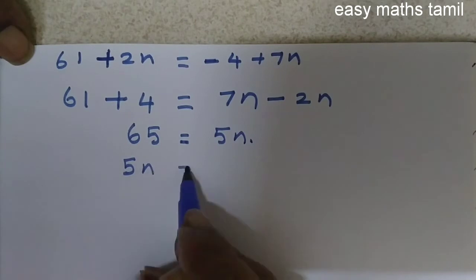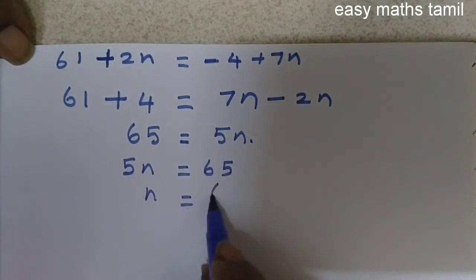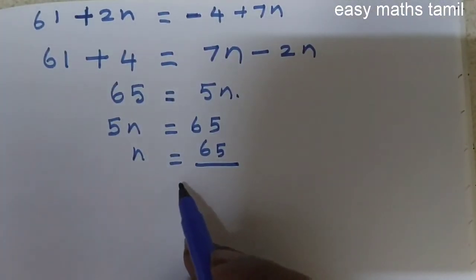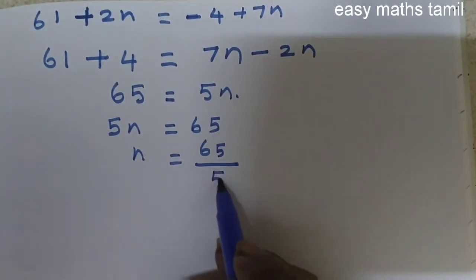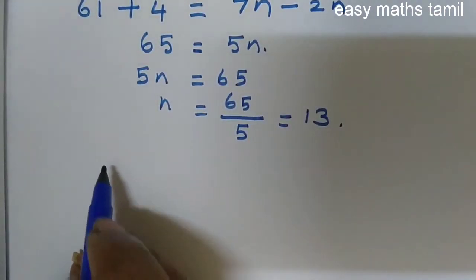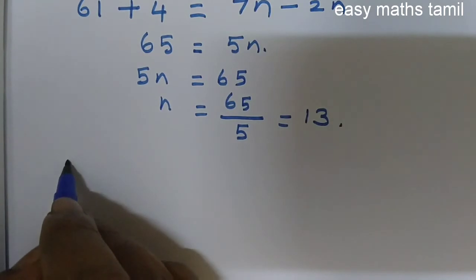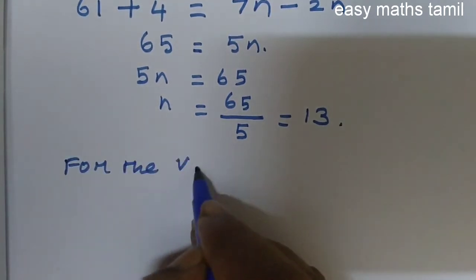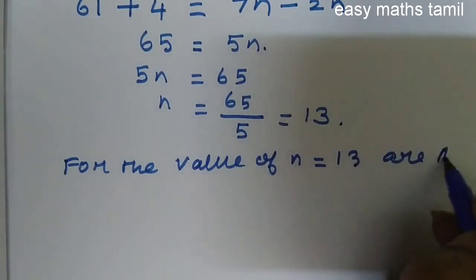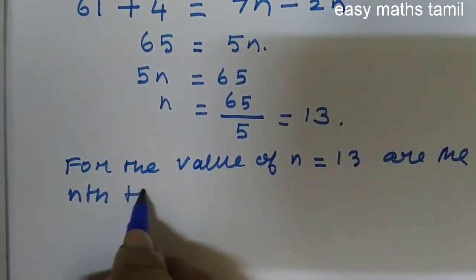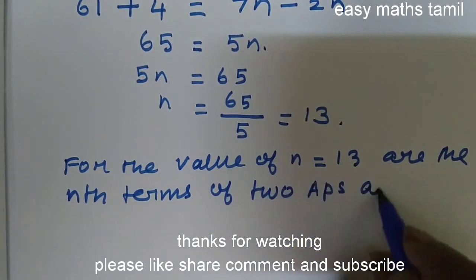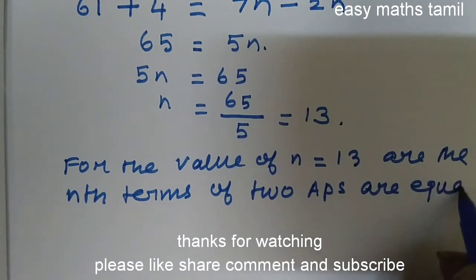5n is 65, so n is 65 by 5. This 5 will go to the denominator when taking this to the other side of the equation, so 13. The value of n is 13 where the nth terms of two APs are equal. Thanks very much.